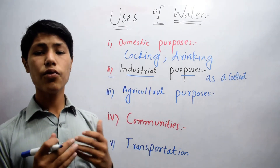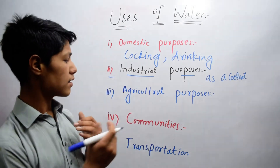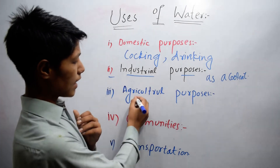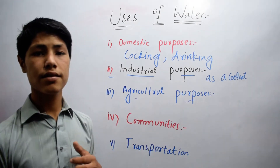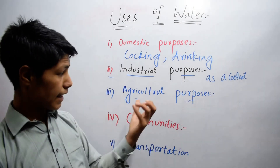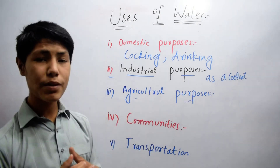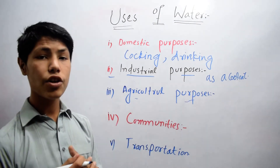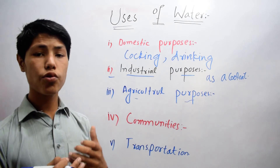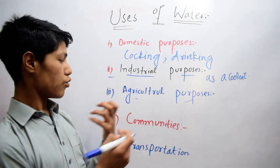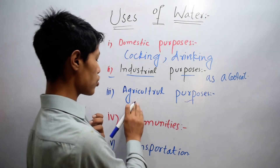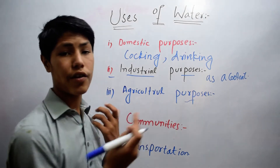The third way is agricultural purposes. Agricultural purposes means that we want to grow our crops, so we use water.